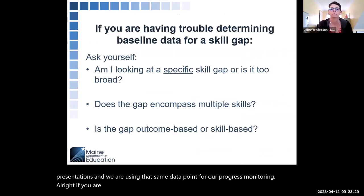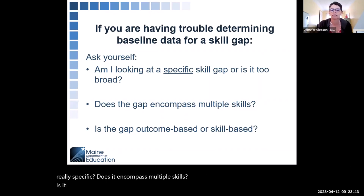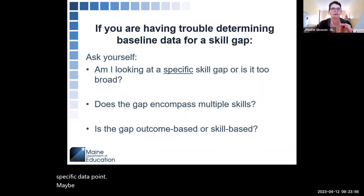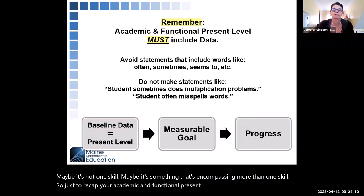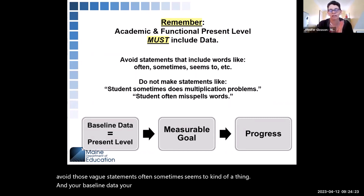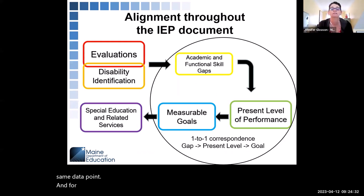If you are having trouble determining your baseline data for a specific skill gap, really look at that skill gap. Is it really specific? Does it encompass multiple skills? Is it an outcome and not really a skill? If you can't come up with a really specific data point, maybe it's not one skill. To recap: your academic and functional present level is your baseline data. Avoid vague statements like 'often,' 'sometimes,' 'seems to.' Your baseline data, your goal measurement, and your progress monitoring all use the same data point. For every gap in Section 4, you have a present level and a goal.